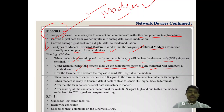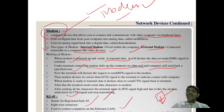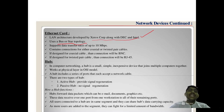RJ45 connector stands for Registered Jack 45 — an 8-way connector used to connect computers on Ethernet LAN. Ethernet card is a LAN architecture developed by Xerox Corporation along with DEC and Intel, used by bus or star topology. Data transfer rate is up to 10 Mbps.